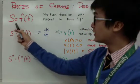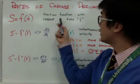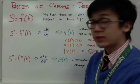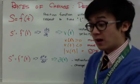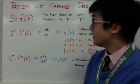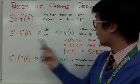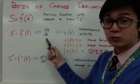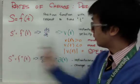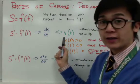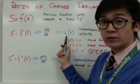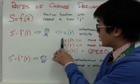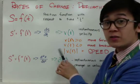The first function, s equals f of t, is the position of a particle with respect to time — the original function you will see in word problems, especially in rectilinear motion problems. The first derivative gives velocity, and it can be denoted as s prime, f prime, ds/dt, or v of t. Instantaneous velocity is given by the first derivative, so it's important to know those notations.